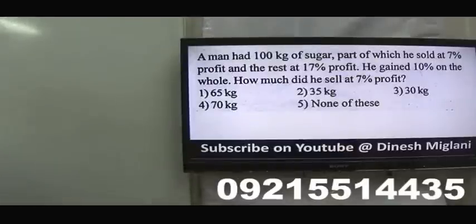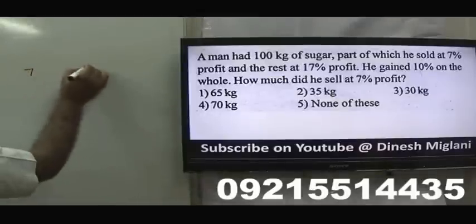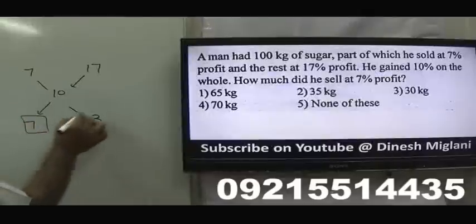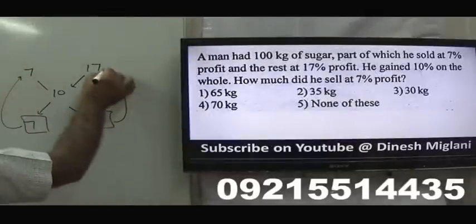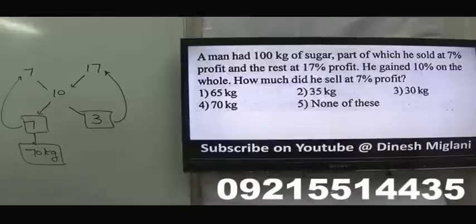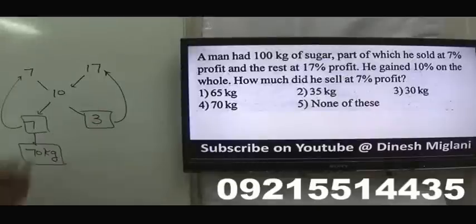A man had 100 kg of sugar. Part was sold at a profit of 7%, rest at a profit of 17%, and he gained 10% overall. How much did he sell at 7% profit? Apply allegation with 7, 17, and mean 10: differences give ratio 7:3. The portion for 7% profit = 7/(7+3) × 100 = 70 kg. Answer: 70 kg.